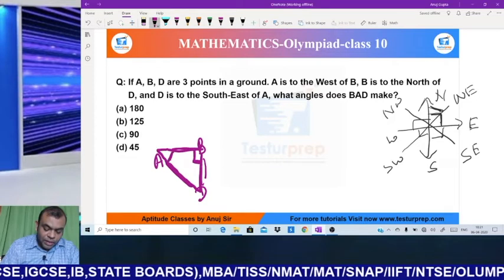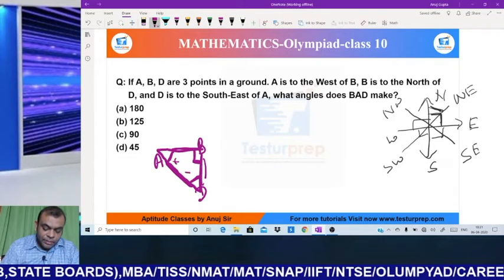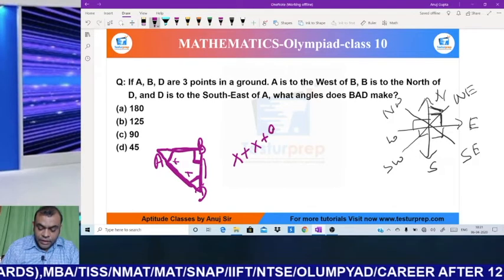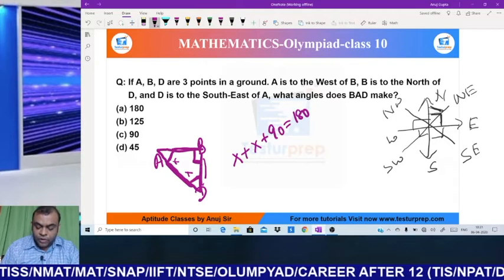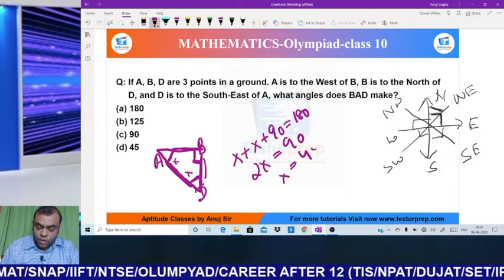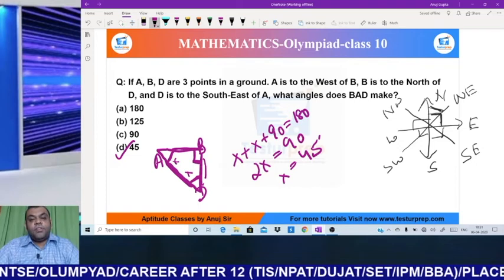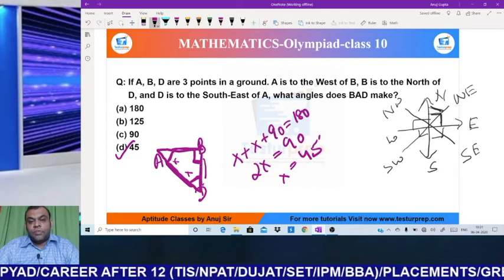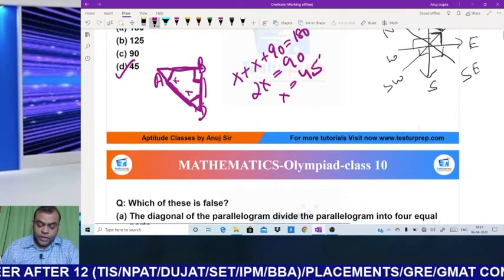These two angles are equal. So let this angle be x, this angle be x. Now, x plus x plus 90 should equal 180 using the angle sum property of triangle. So 2x equals 90. So x becomes 45 degrees. So the angle B, A, D is 45 degrees. I hope it's clear to everyone how I solved this question using the directional graph. So let us try to do the next question.